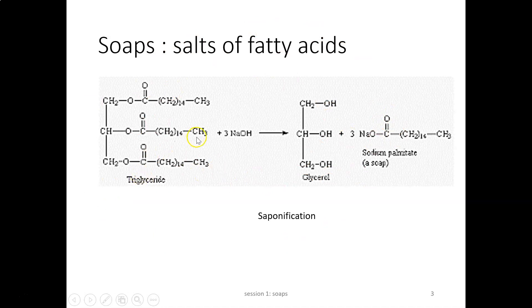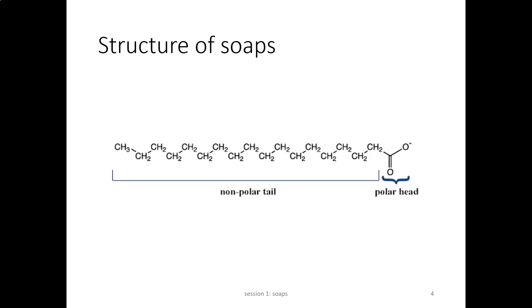Usually what we do is take a known amount of oil or fat, heat it to a particular temperature, and add a calculated amount of caustic soda or caustic potash to that molten oil or fat. A reaction occurs and ultimately you obtain soap, which is the sodium salt of the corresponding fatty acid.